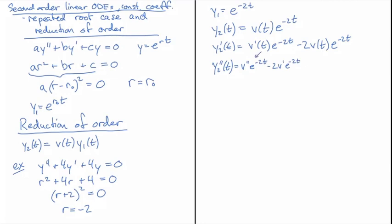So v''e^(-2t) - 2v'e^(-2t). That's the two derivative pieces of this product and then on this one I'm going to get a -2v'e^(-2t).